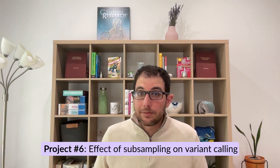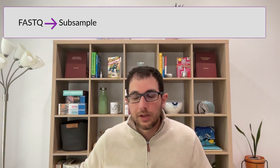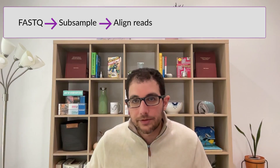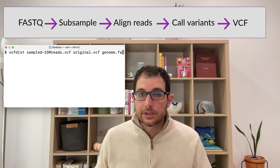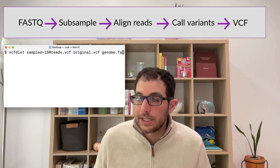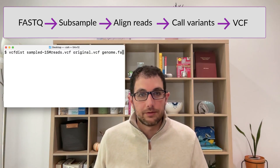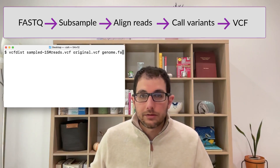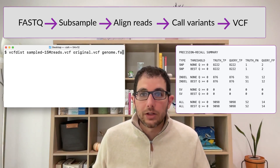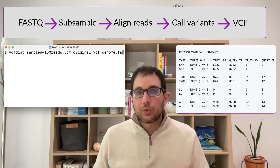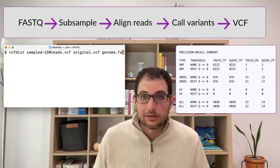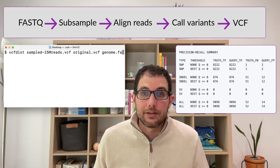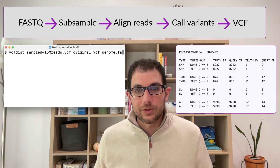Number six: you can do the same thing for variant calling. You start with a FASTQ, subsample, align the reads, run a variant caller, and now you have a VCF. You can use vcfdist to compare the subsampled VCF to the original VCF, then look at metrics like precision, recall, and F1. Through this process you'll get comfortable with variant calling, accuracy metrics, and VCF files, which are not always easy to understand.